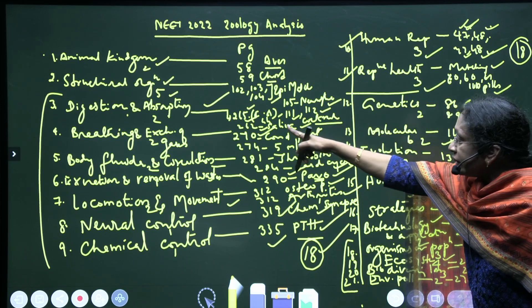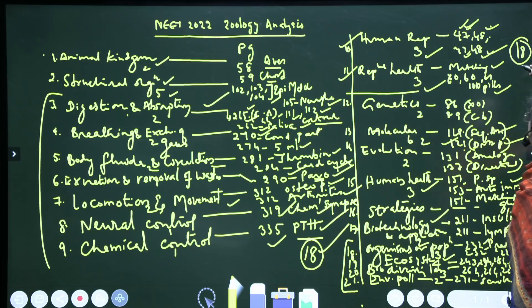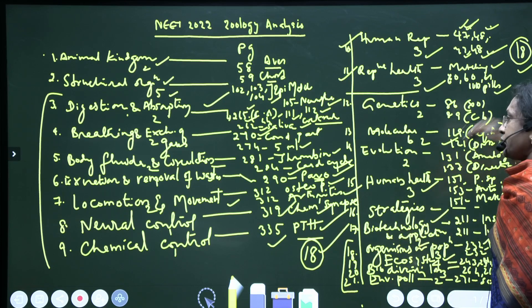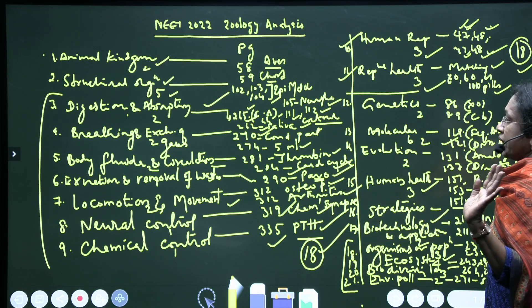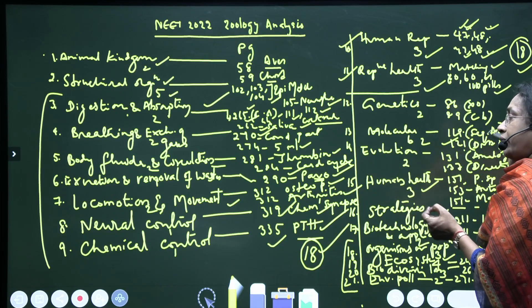Again, from the digestive system to digestion and absorption till reproductive health, we got 18 questions from Human Physiology, as usual from the previous papers also, directly from NCERT. I will upload the video again for your reference from 2021.